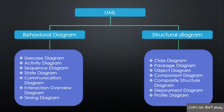In the Structural Diagrams, there are sub-diagrams: Class Diagram, Package Diagram, Object Diagram, Component Diagram, Composite Structure Diagram, Deployment Diagram, and Profile Diagram. These are the types of UML diagrams.